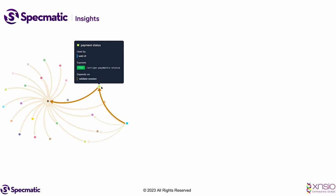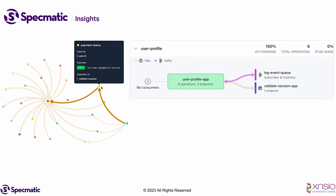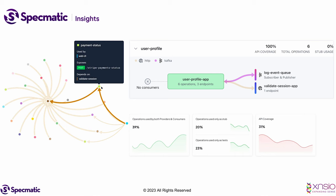We recently launched Specmatic Insights, which allows teams to visualize service dependencies visually — built from real data generated by running contract tests in the pipeline. You can see which service depends on which other service, which endpoints it depends on, and identify single points of failure or choking points in your architecture. You can drill down into a specific API to see its consumers, dependencies, and whether they're HTTP or Kafka. You can also monitor overall CDD adoption coverage — how many endpoints are in the central repo and whether coverage is trending up or down.